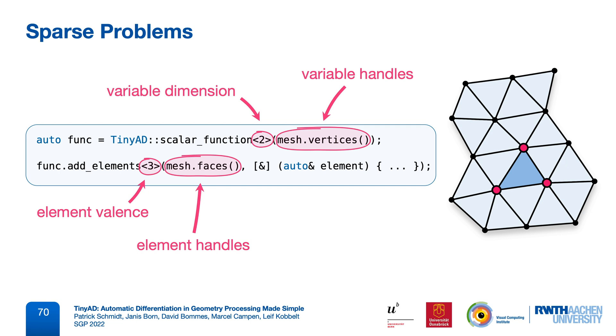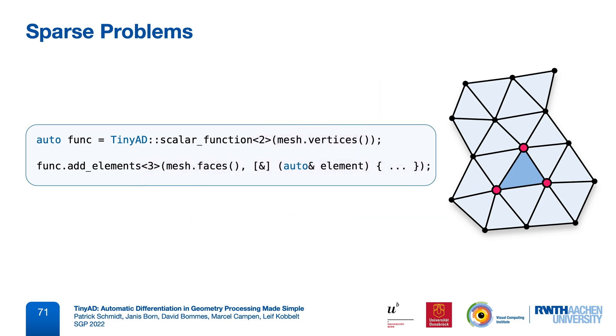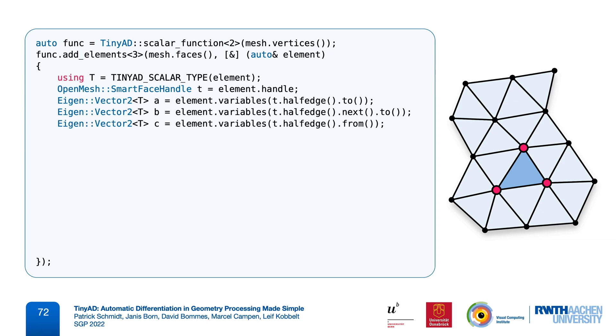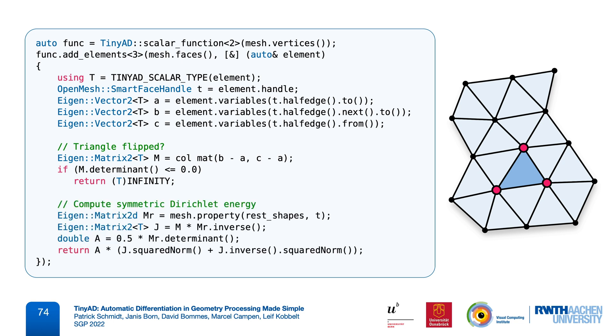Inside this function, we access our three vertex positions in a specific way, such that the interface can infer the local to global index mapping. We can then perform computations with these variables and with any constant data that exists outside this function. Here, we first check if our triangle is flipped, and then compute the symmetric Dirichlet energy.